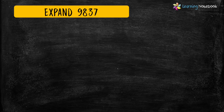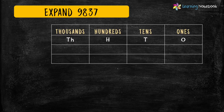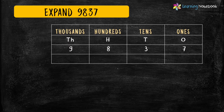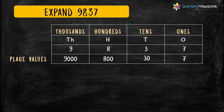Let's see the next question: expand 9837. To write the expanded form, let's first make the place value chart for this number. We will write digit 7 at 1's place, digit 3 at 10's place, digit 8 at 100's place, and digit 9 at 1000's place. Now let's find the place values: the place value of 7 is 7, the place value of 3 is 30, the place value of 8 is 800, and the place value of 9 is 9000.